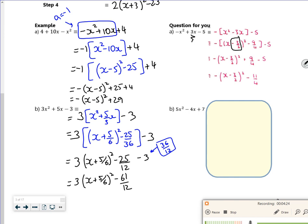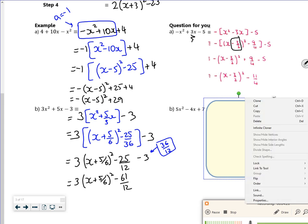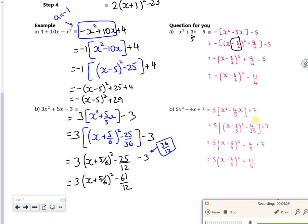There we go. One more here. So you've got to take out the 5. So you've got 4 over 5. Do the completing the square, so you've got minus 2 over 5. Square it as a minus 4 over 25. Multiply the 5 through, gives you a minus 4 over 5. 7 is the same as 35 over 5. So I've got minus 4 plus 35, plus 31, plus 5.